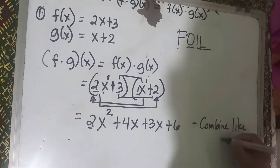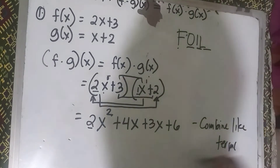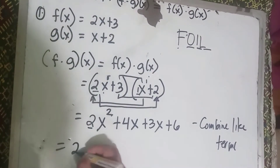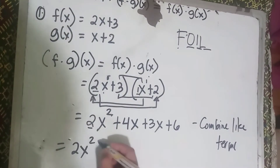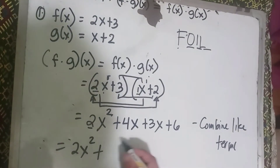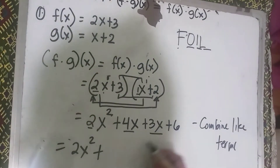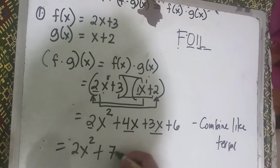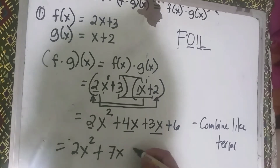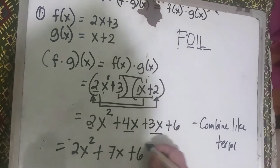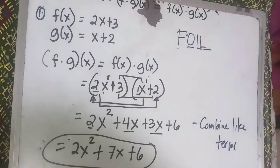Now combine like terms: 2x squared, plus 4x plus 3x which is 7x, plus 6. So the final answer is 2x squared plus 7x plus 6.